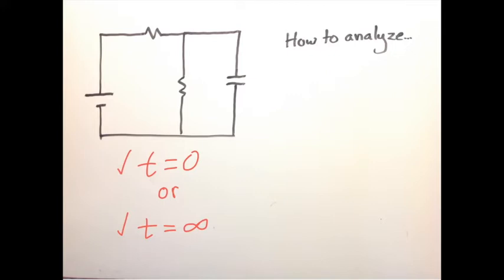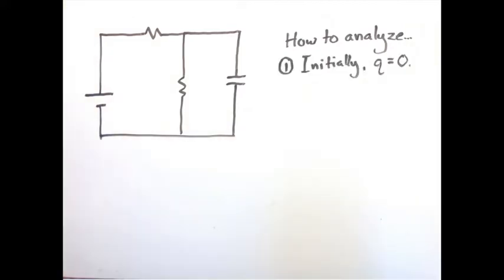And we have to be able to solve for quantities related to those two moments. First assumption is this. Initially, the charge on the capacitor is probably zero. So, at the moment that we close the switch, we have to assume that the charge on the capacitor is zero at that precise moment.